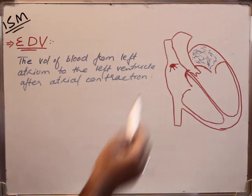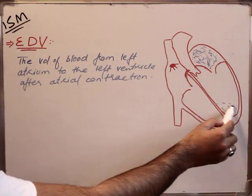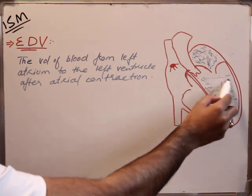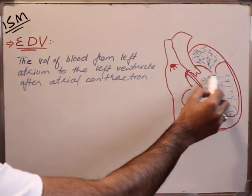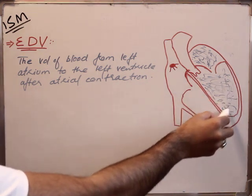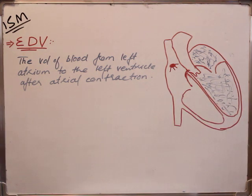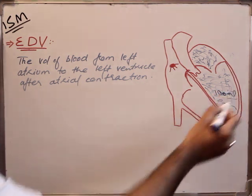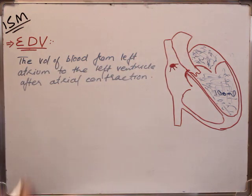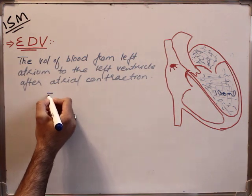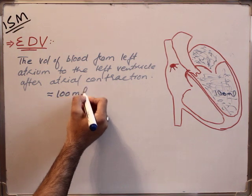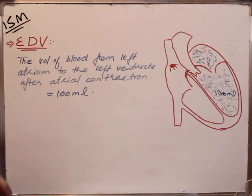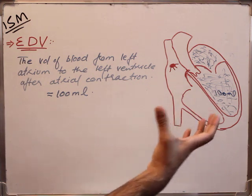Due to the contraction of the atrium, blood reaches the ventricles. For example, approximately 100 milliliters of blood reaches from the atrium to the ventricle. This is called end diastolic volume — that is, approximately 100 milliliters when the ventricle is completely dilated.